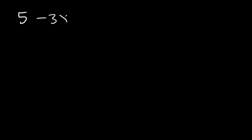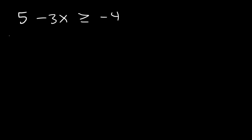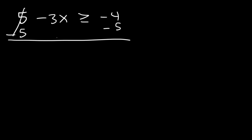Let's try another example. Go ahead and find the solution to this equation and then plot it on a number line. What do you think the first thing we should do — divide by negative 3 or subtract by 5? What you want to do is subtract by 5 first. These will cancel, so negative 3x will be greater than or equal to negative 4 minus 5, which is negative 9.